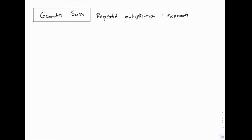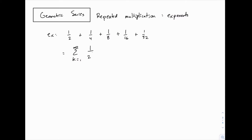Here we're going to look at one category, one type of series that is very significant, called a geometric series. We've actually already seen an example of this. The first example we looked at — the series 1/2 plus 1/4 plus 1/8 plus 1/16 and so on, which we can also write as the series from k equals 1 to infinity of 1 over 2 to the power of k — this is actually a geometric series.